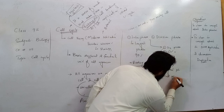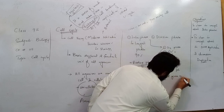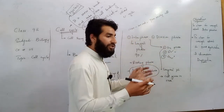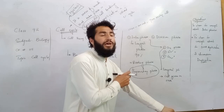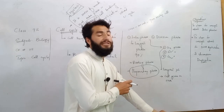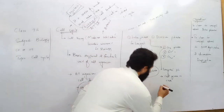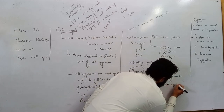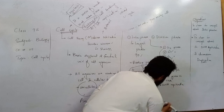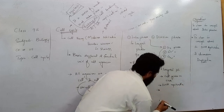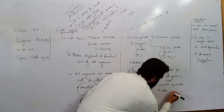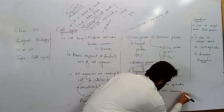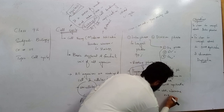During the G1 phase, the cell grows in size and undergoes certain chemical changes which prepare the cell for DNA replication. The cell ensures that RNA is ready, ribosomes are ready, and several enzymes are ready.